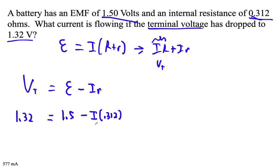Now we're just solving for I. So I'm going to calculate 1.32 minus 1.5, and then divide by negative 0.312.